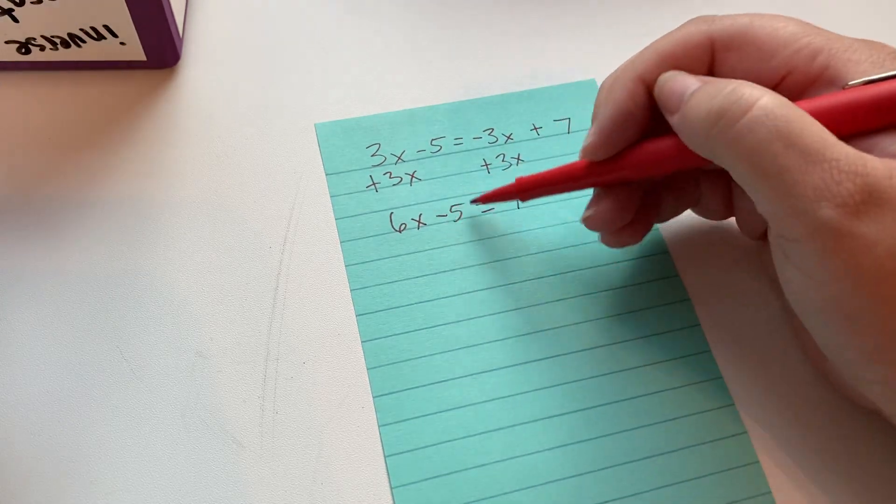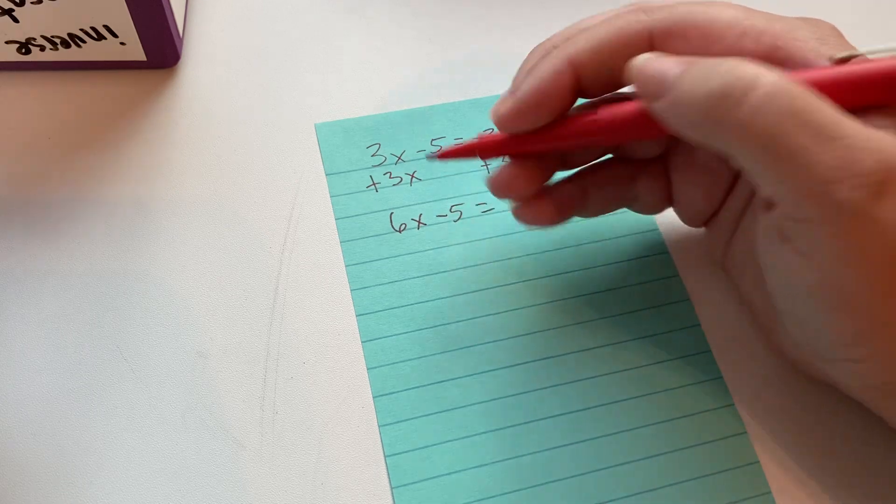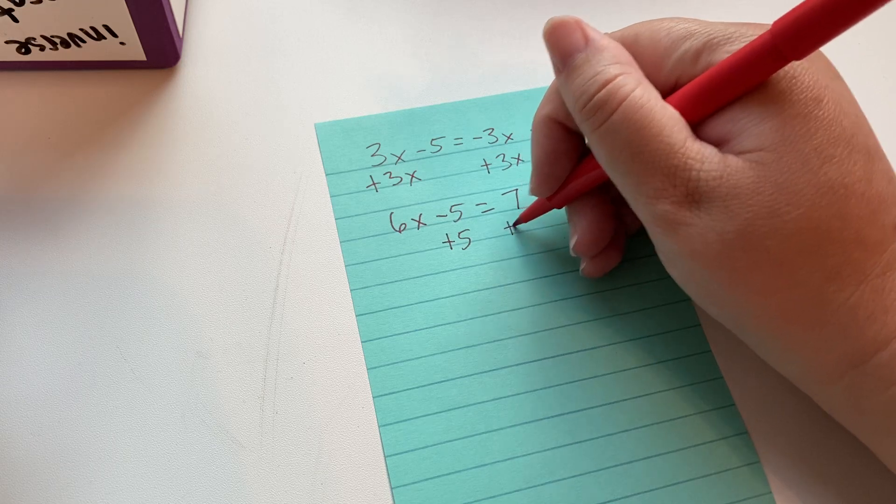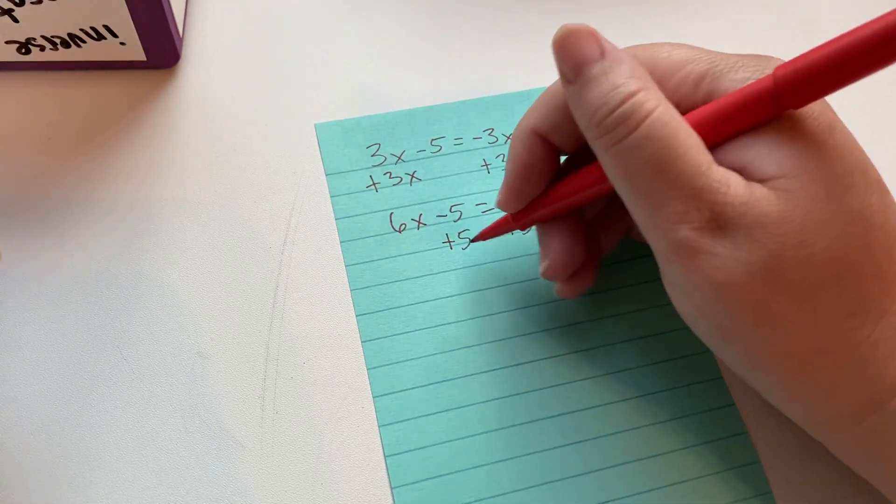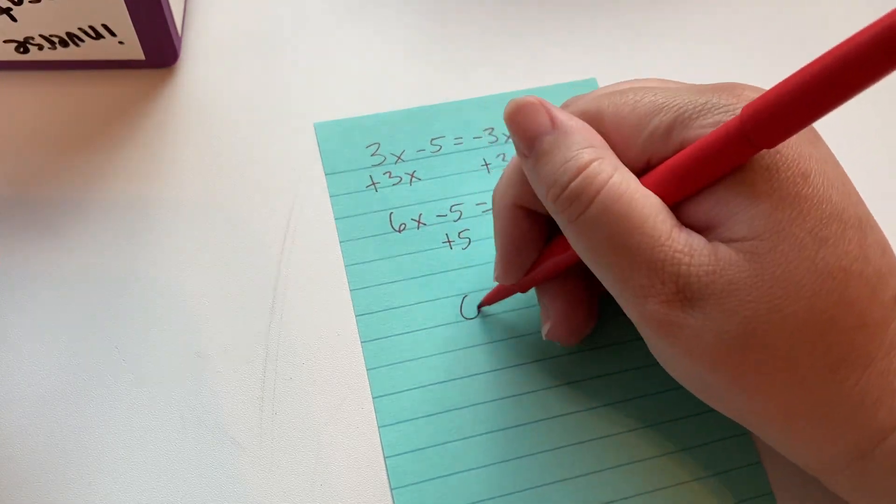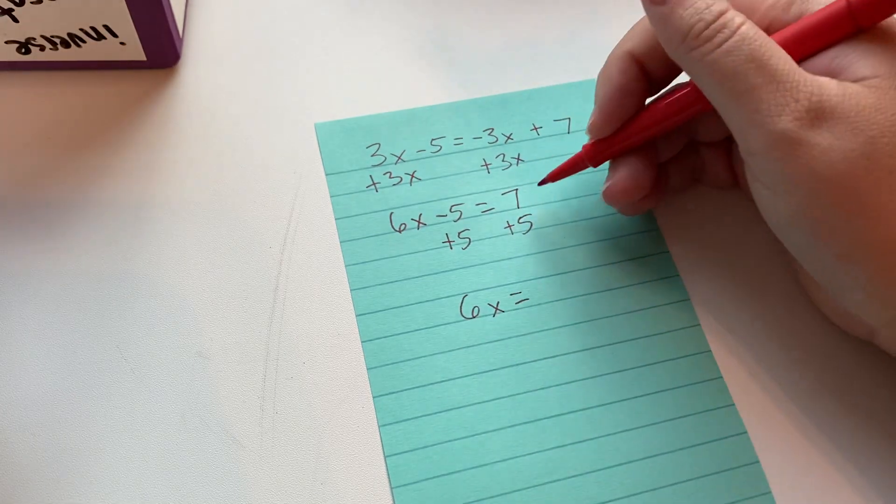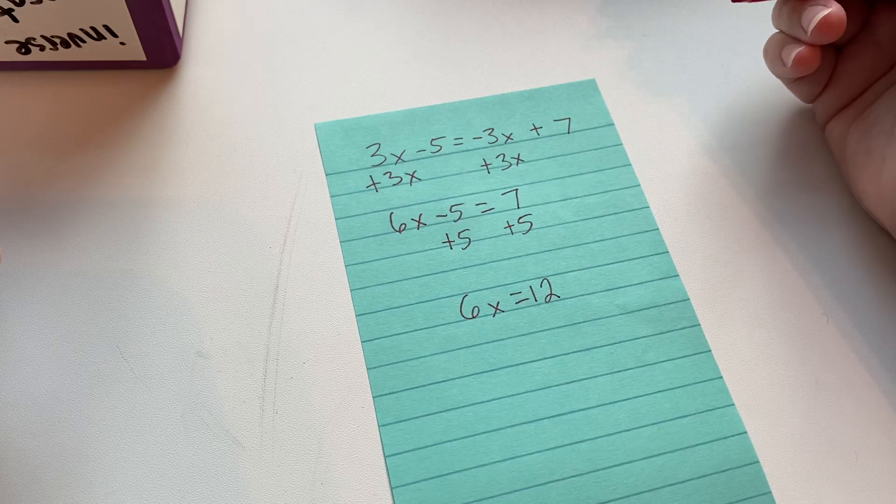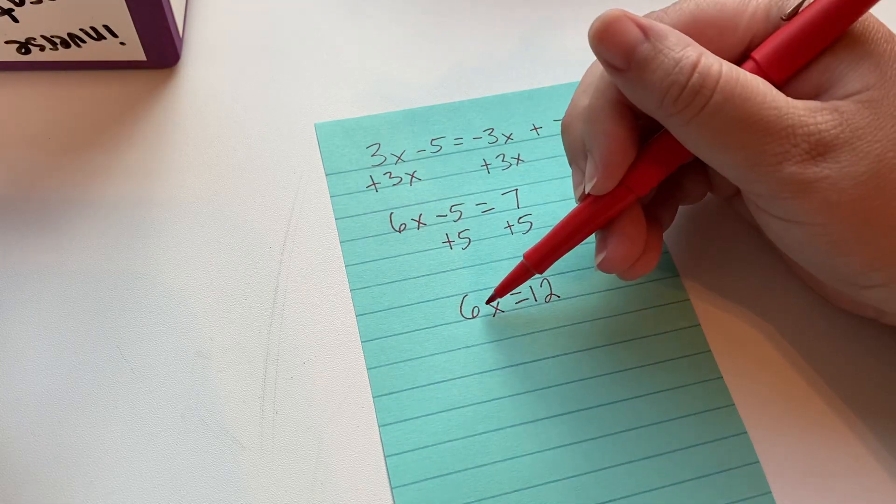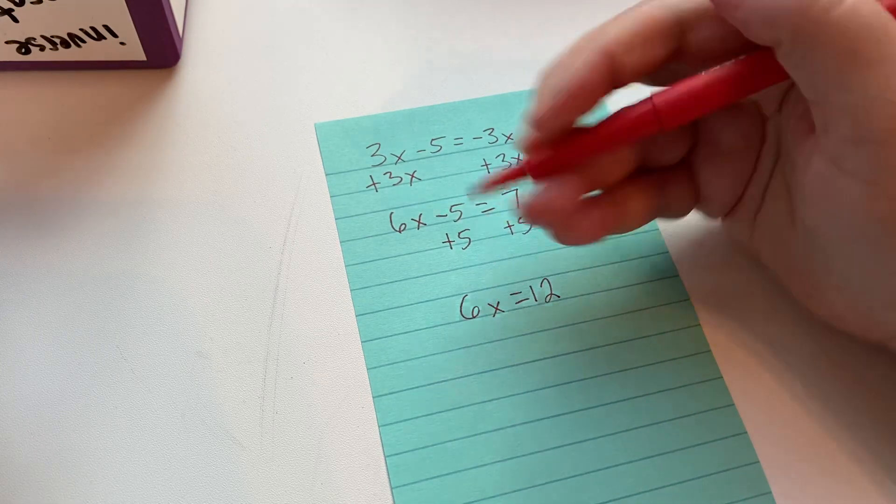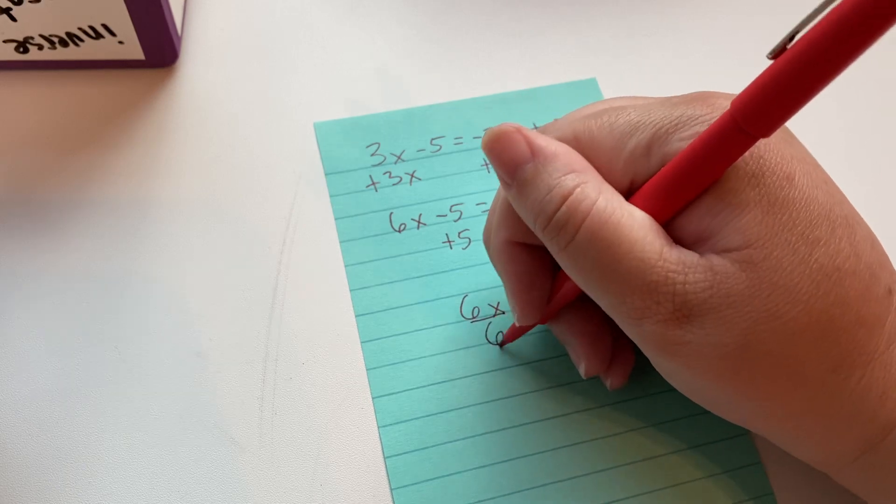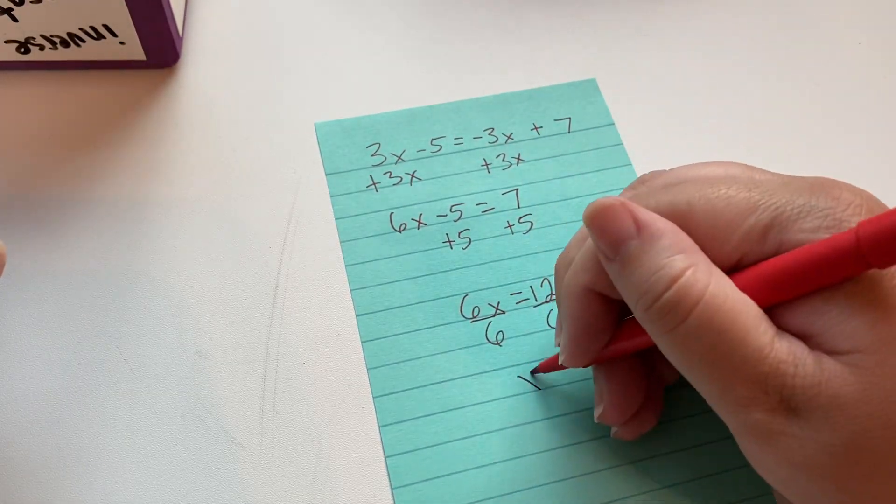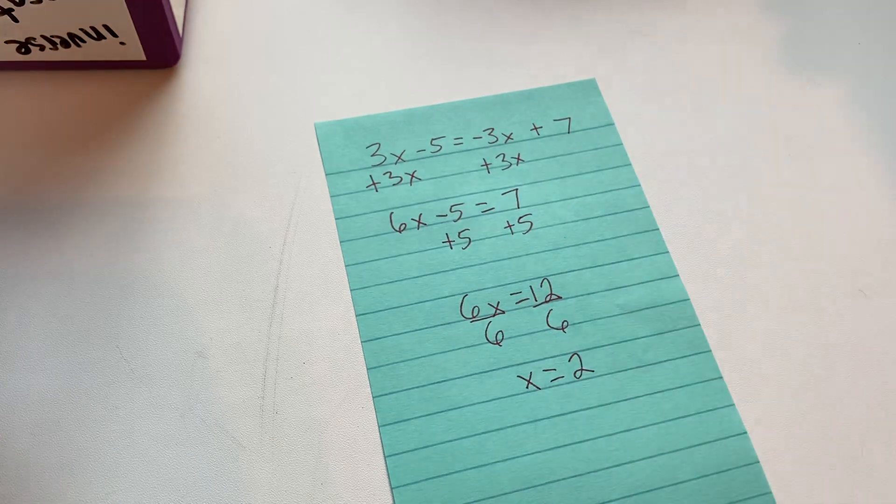Now this is the one we want to get rid of, eliminate it. So we're going to add 5 to make that 0 and add 5 over here. So that's 0, we're left with 6x equals 5 plus 7, which is 12. Our last operation that we're going to do the inverse of is multiplying. So we're going to do the inverse, which is dividing. So we're going to divide both sides by 6, and x equals 2.